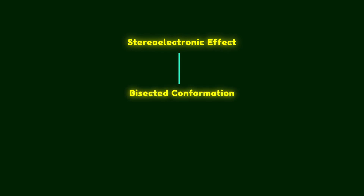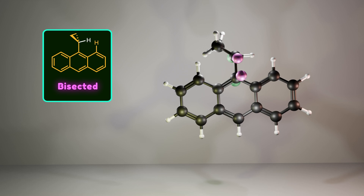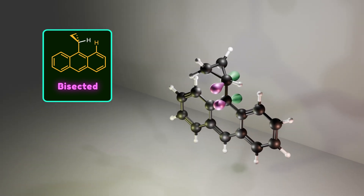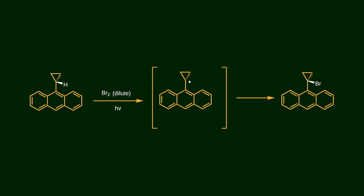The stereoelectronic effect dictates that the bisected conformation is more stable in phenylcyclopropane, activating the carbon-carbon bond through orbital interaction in the transition state. However, if an anthracene derivative is attached to the cyclopropane instead of a phenyl ring, the situation changes — the perpendicular conformation becomes more stable than the bisected conformation. This is because the steric clash between the hydrogen on the cyclopropane ring and the hydrogen on the anthracene overcomes the stereoelectronic effect. With the perpendicular conformation dominant, the carbon-hydrogen bond becomes activated, and the transition state interacts with the aromatic ring, making H-abstraction the preferred pathway.